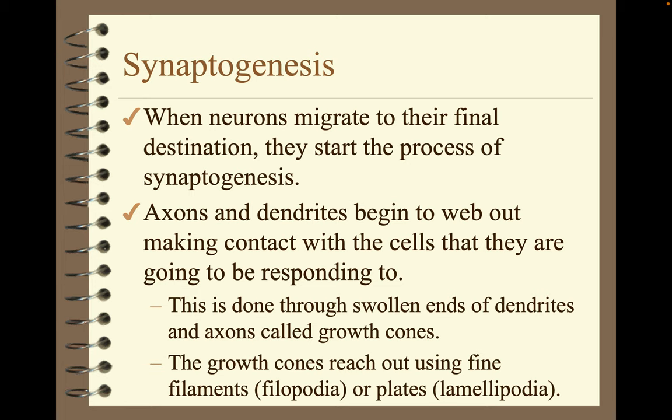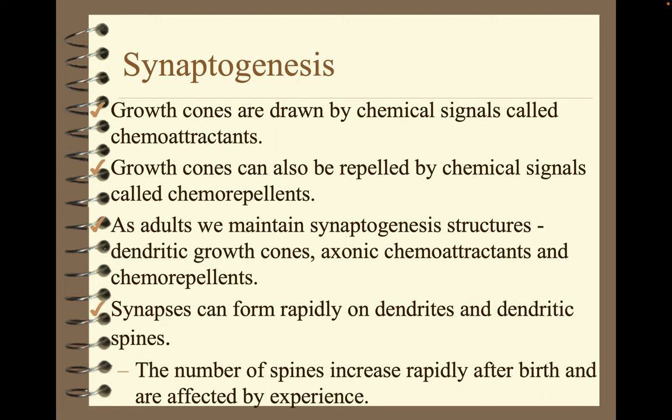When neurons migrate to their final destination, they start the process of synaptogenesis. Axons and dendrites begin to web out, making contact with the cells they are going to be responding to. This is done through swollen ends of dendrites and axons called growth cones. The growth cones reach out using fine filaments called filopodia, or plates called lamellipodia. Growth cones are drawn by chemical signals called chemo-attractants and can also be repelled by chemo-repellants. As adults, we maintain synaptogenesis structures including dendritic growth cones and axonic chemo-attractants. Synapses can form rapidly on dendrites and dendritic spines, and the number of spines increases rapidly after birth and is affected by experience.